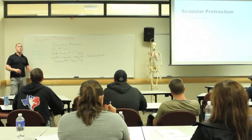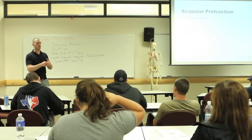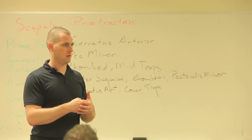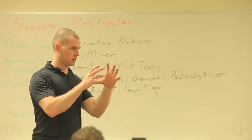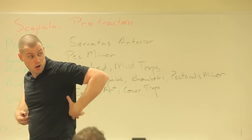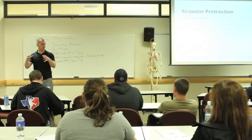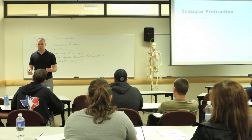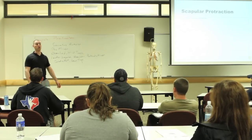Fixators: what is going to need to be stable and functioning well for your scapula to move well? Your spine and trunk. Usually we move proximally — in order for your scapula to move well, all this has to be nice, a nice cylinder. So now all of our fixators are all our core muscles.